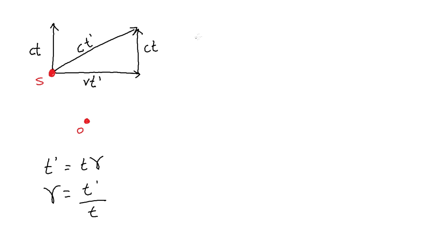Going back to the triangle, basic trigonometry tells us that C, T prime squared, the hypotenuse, is equal to V, T prime squared plus C, T squared by Pythagoras' theorem.